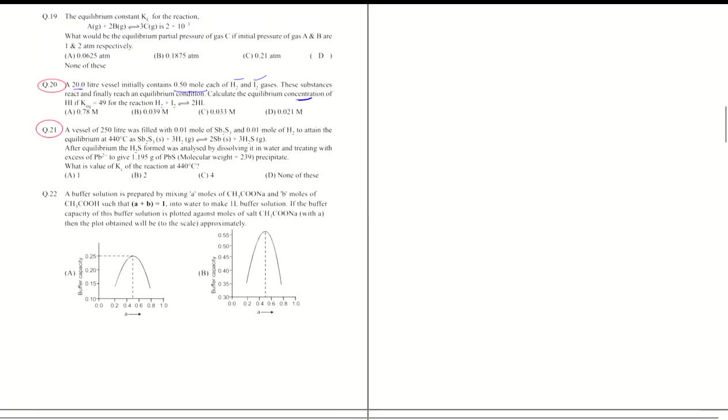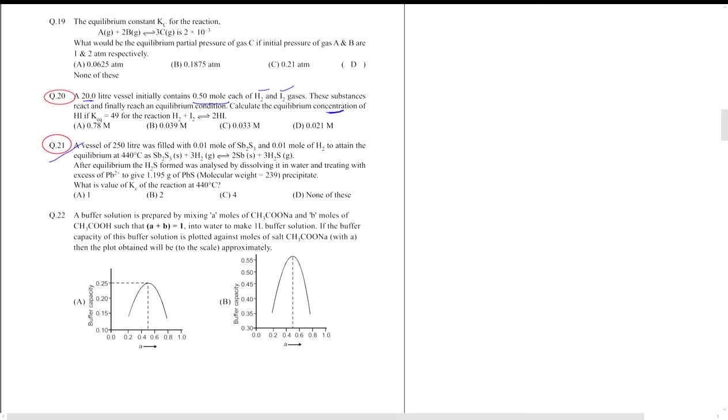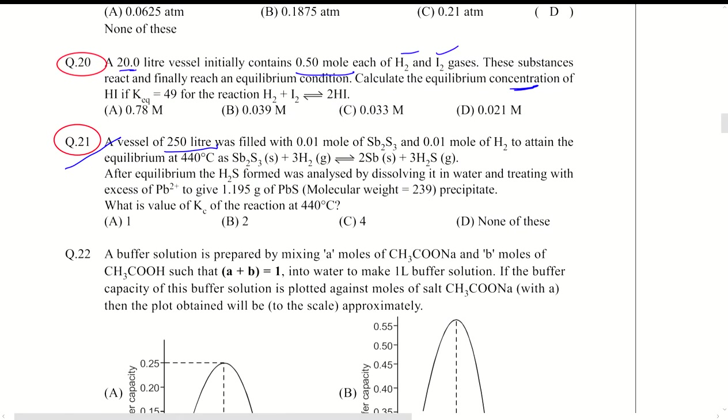This is the solution to questions 21 to 30. Question 21: a 250 liter vessel with SB2S3 solid, 0.01 mole, and H2 gas, 0.01 mole as well. At 440 degrees, after equilibrium, the H2S that was formed was analyzed by dissolving in water, and this was the amount of PBS obtained.